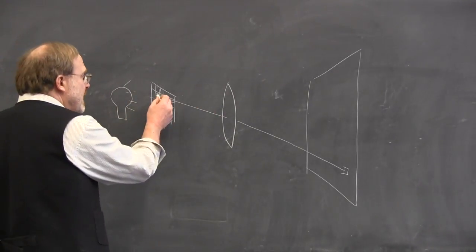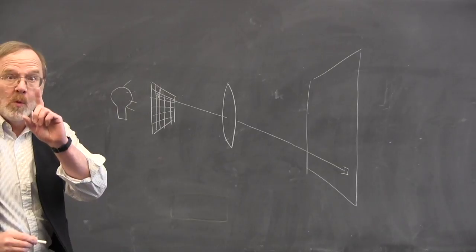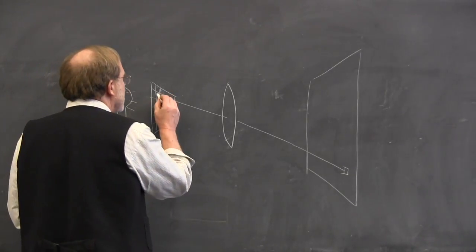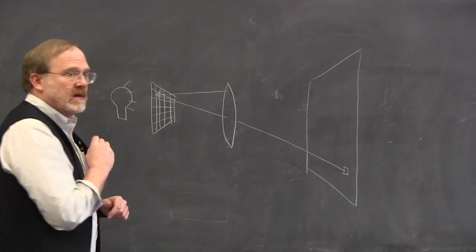But of course, this pixel doesn't just radiate that one ray. It's radiating rays in all directions. So for instance, there's one that goes up to that part of the lens.